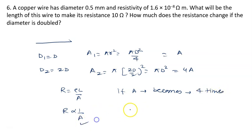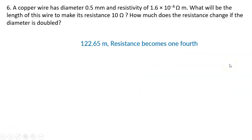So what was the initial resistance? It was 10 ohm, so 10 divided by 4 is 2.5 ohm. So new resistance will be 2.5 ohm. The right answer to the problem will be 122.65 meter is the length and resistance will become one fourth, that is 2.5 ohm.